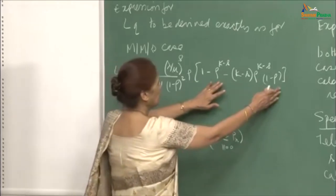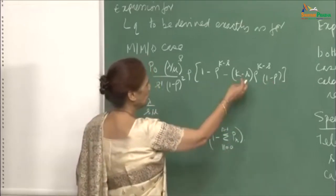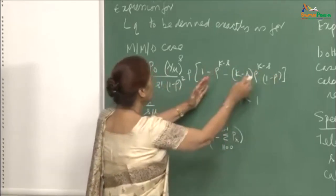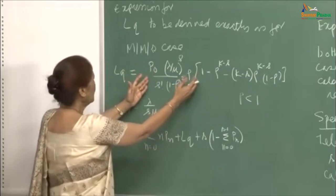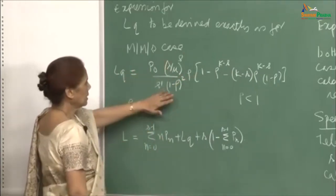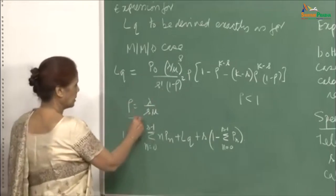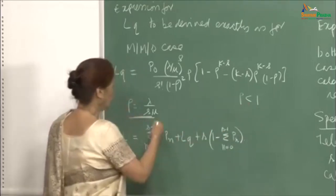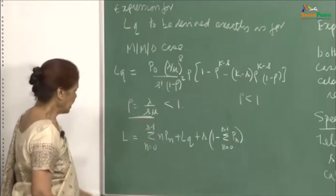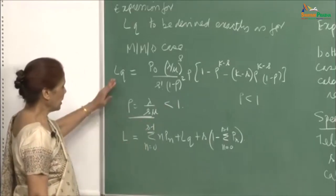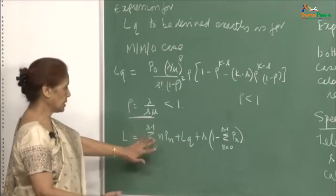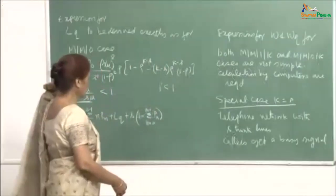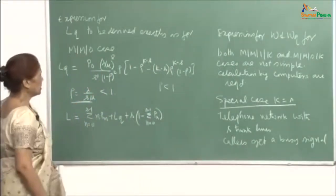The formula for L and Lq: the derivation is exactly the same as for MMS. The expression for Lq will be derived exactly as for MMS where k is infinity, except you sum sigma (n minus s) times p_n from n varying from 0 to k instead of 0 to infinity. When k goes to infinity and rho is less than 1, that extra term vanishes and you are left exactly with the Lq for the MMS case. For k becoming very large, rho must be less than 1. The expressions are written here for completeness so you can check your derivations.